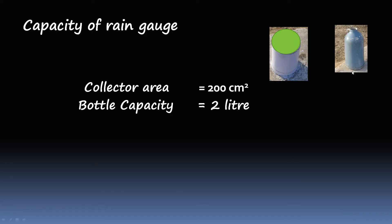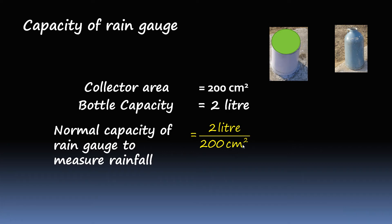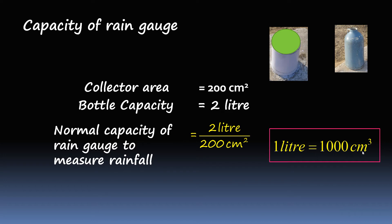Let's assume the bottle is 2 litres — how much rainfall can it store? We divide 2 litres by 200 centimetres square to get the depth of rainfall the gauge can store. Since 1 litre equals 1000 centimetres cube, 2 litres is 2000 centimetres cube. Dividing 2000 centimetres cube by 200 centimetres square gives 10 centimetres of rainfall.